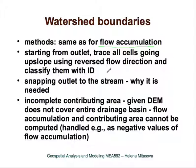When computing contributing area or watershed boundaries for a given point — for example, where a gauge is located — we need to make sure the outlet used to extract the watershed falls within a grid cell that has the local maximum of flow accumulation. This ensures that the entire contributing area is captured.